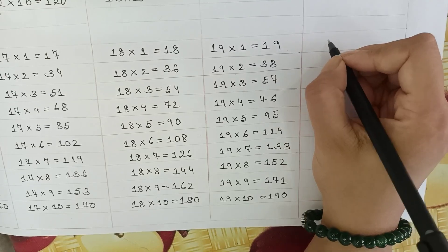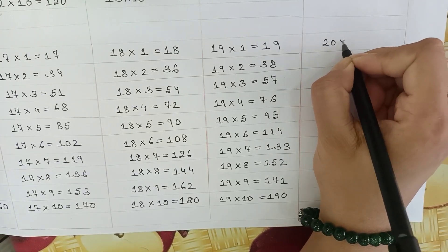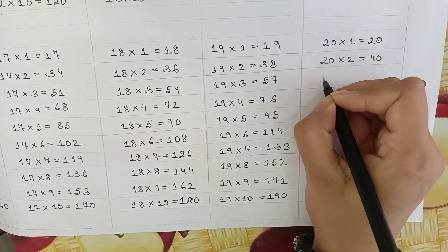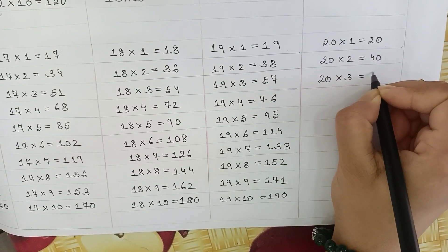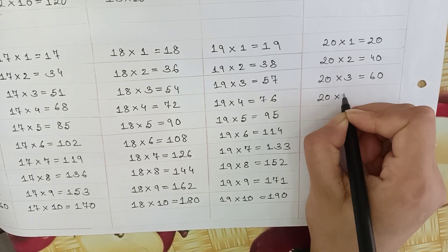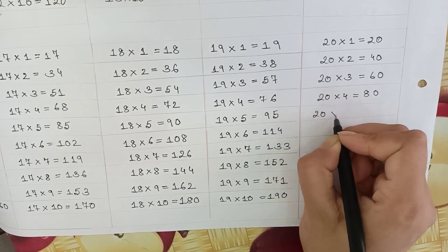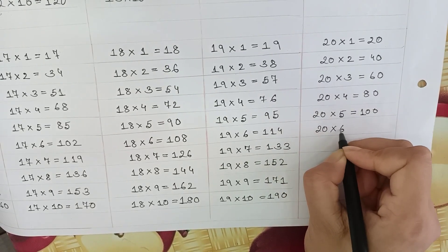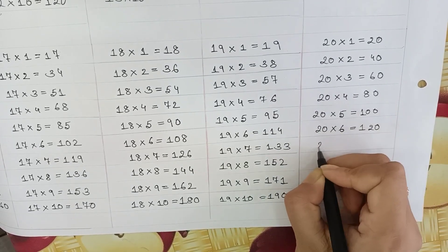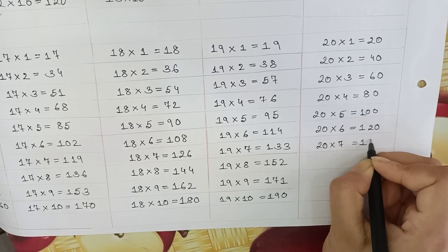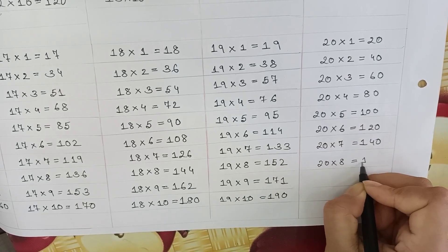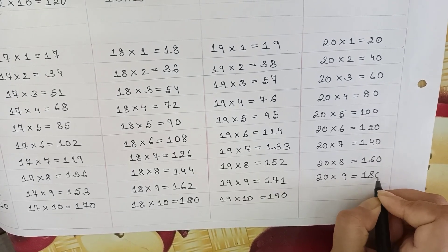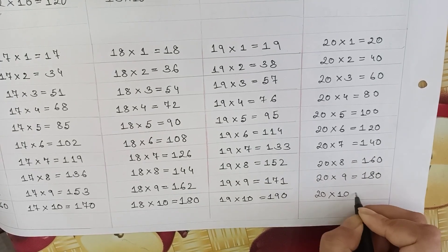Last table: 20. 20 x 1 is equal to 20. 20 x 2 is equal to 40. 20 x 3 is equal to 60. 20 x 4 is equal to 80. 20 x 5 is equal to 100. 20 x 6 is equal to 120. 20 x 7 is equal to 140. 20 x 8 is equal to 160. 20 x 9 is equal to 180. 20 x 10 is equal to 200.